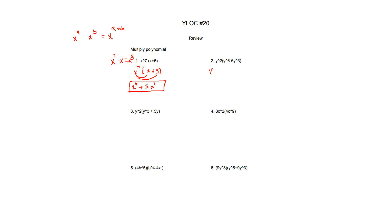Number 2, we have y squared times y to the power of 6 minus 6y to the power of 3. So we're going to distribute again just like number 1. y squared times y to the power of 6 is just y to the power of 8 — remember this rule, just 2 plus 6. Then y squared times negative 6y cubed is just negative 6y to the power of 5. So this is your answer for number 2.